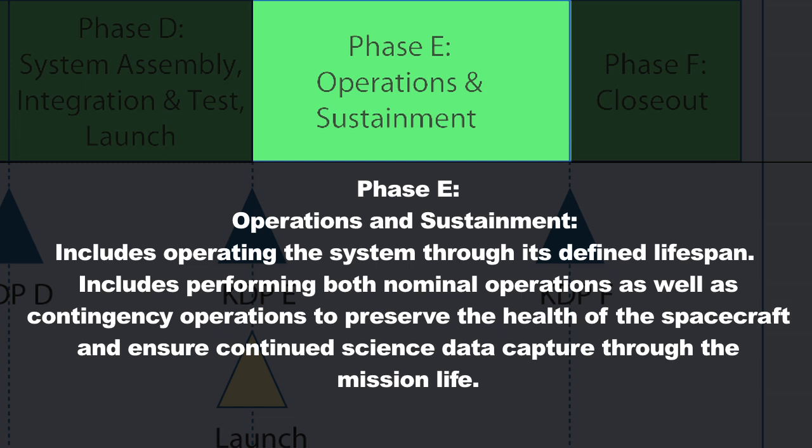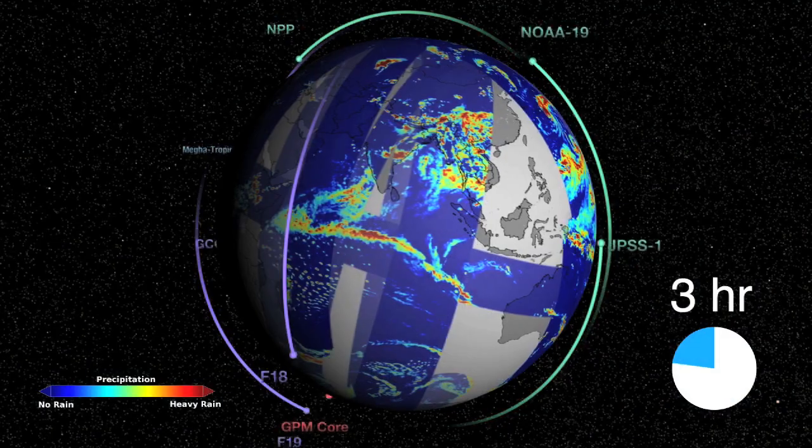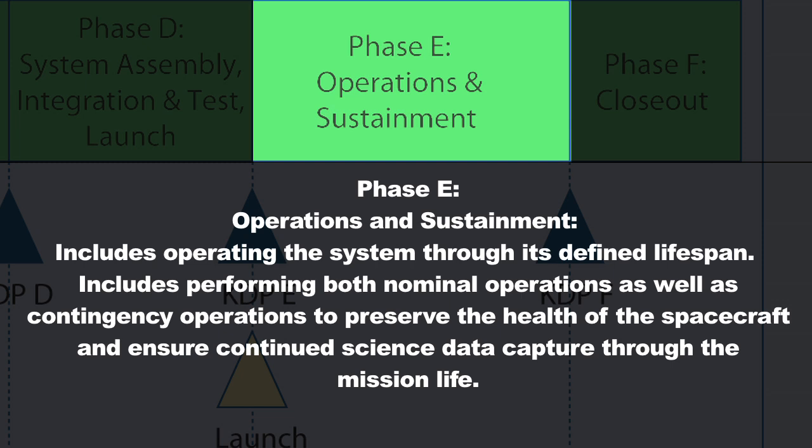Phase E is operations. At the end of that operational period, you might still have a healthy spacecraft. A lot of satellites last a lot longer than originally planned. At that point, you could go back to the stakeholders and say, I still have a really good operating satellite and I'm still getting really good science data, and there is more data to be had if you'll allow me to operate for longer. You can continue to get approval if the science value of the satellite is still contributing to the community and the system is healthy enough. Usually in two-year increments, NASA will give you approval to operate for a few more years, and then you come back again to show you're still healthy and providing good science value.